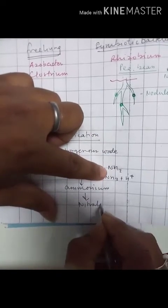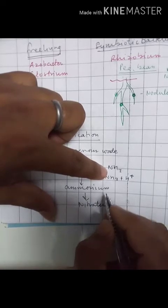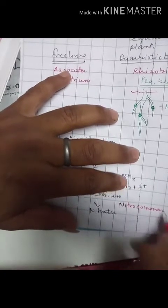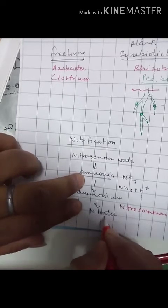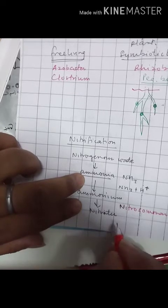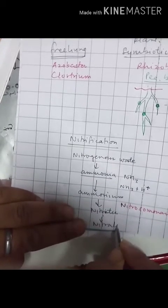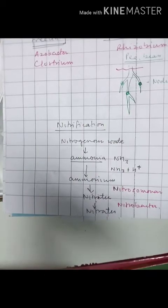When ammonia combines with a proton it becomes an ammonium ion. This ammonium ion is first converted into nitrites, and this conversion is carried out by the bacterium Nitrosomonas. Then nitrites are further converted into nitrates by Nitrobacter.